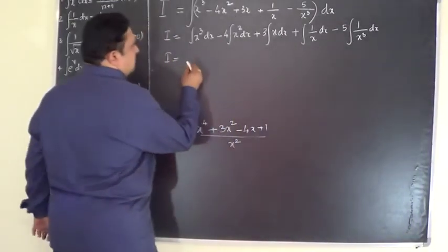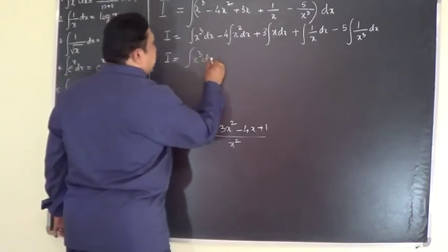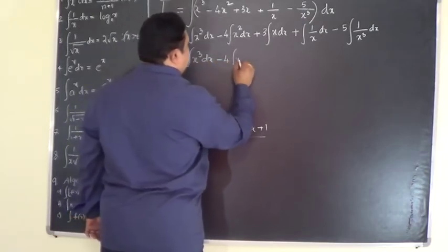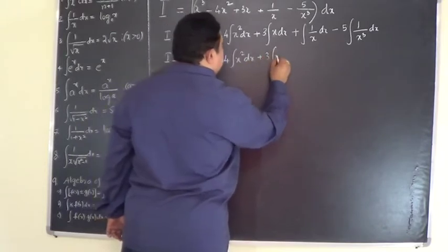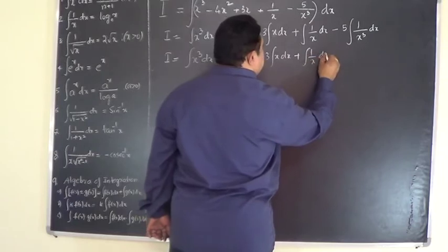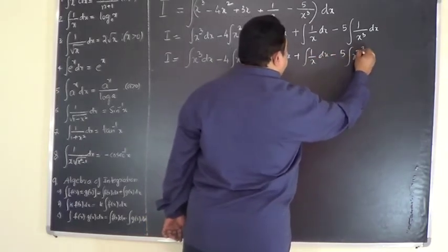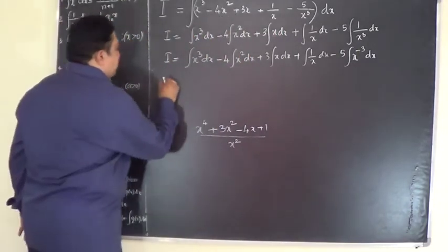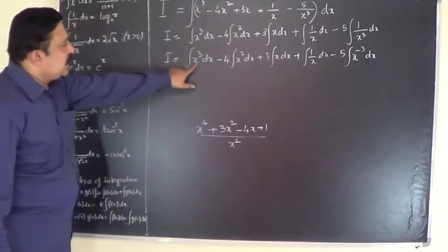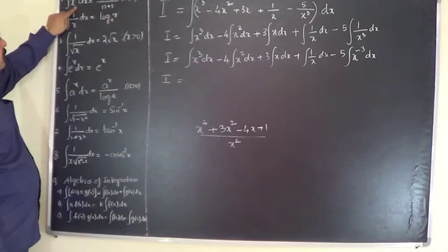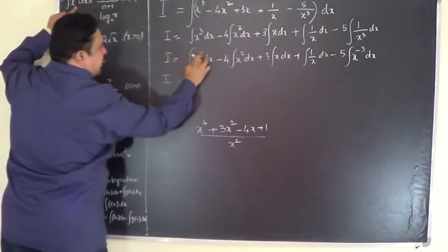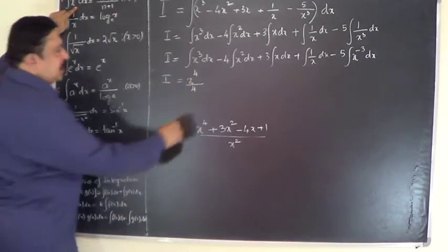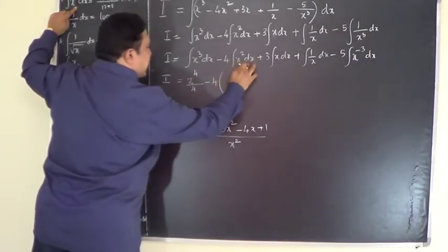So now write it as i equals. Integral x cubed dx minus 4 times integral x squared dx plus 3 times integral x dx plus integral 1 by x dx minus 5 times integral x to the power of minus 3 dx, shifting x cubed from denominator to numerator. Now integrate each one. For integral x cubed dx, use the power rule: x to the power of n plus 1 divided by n plus 1. That is 3 plus 1 by 3 plus 1, giving x to the power of 4 by 4.